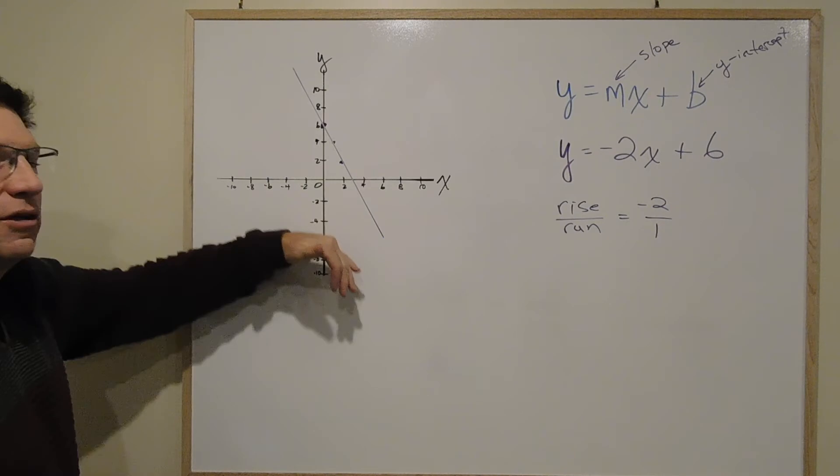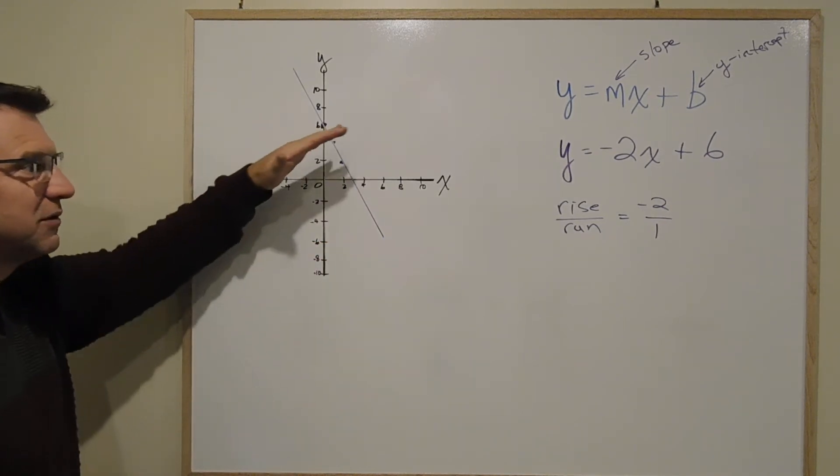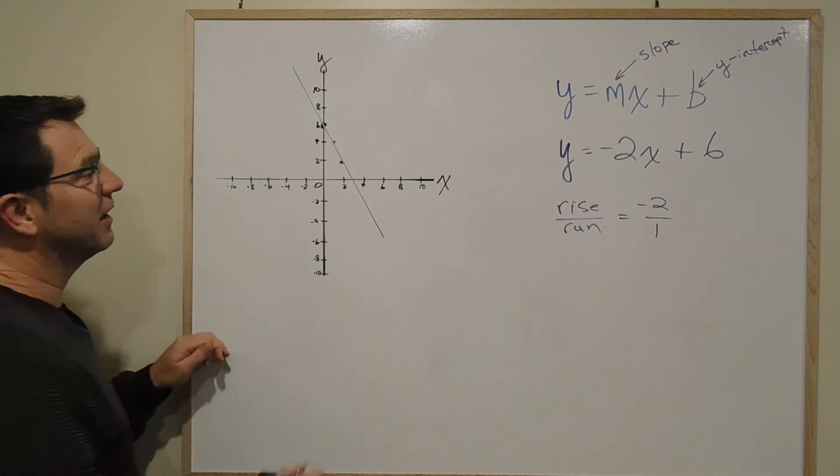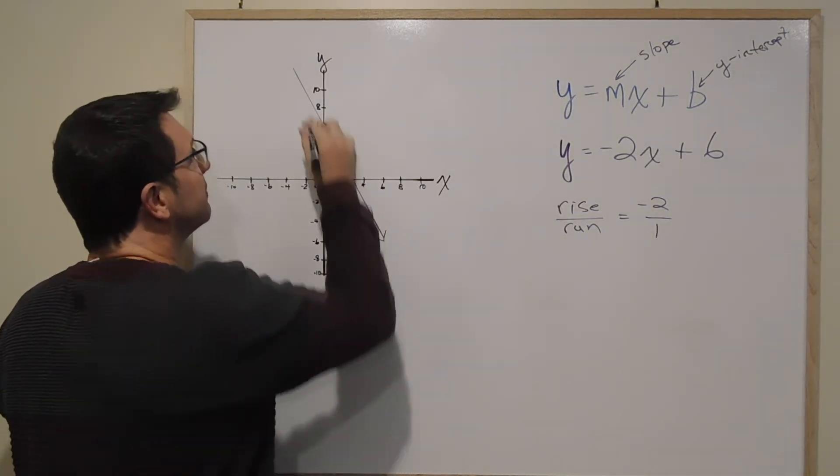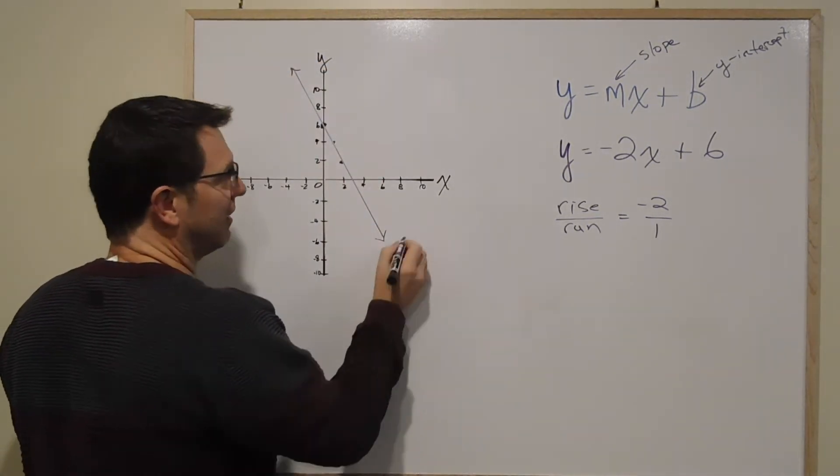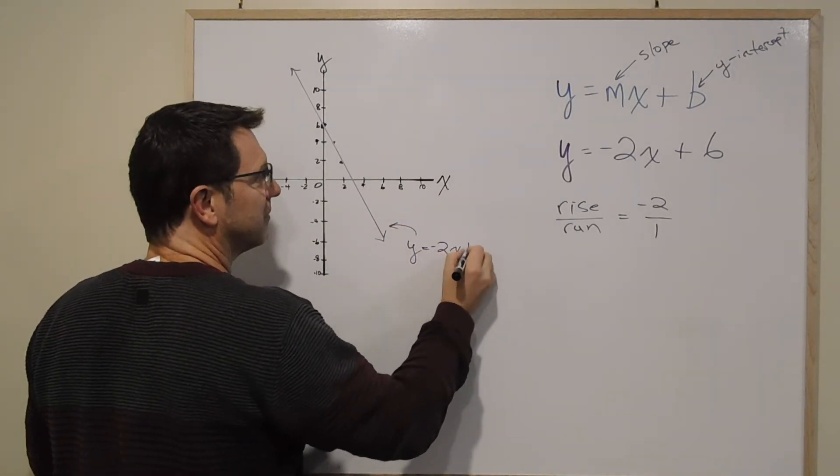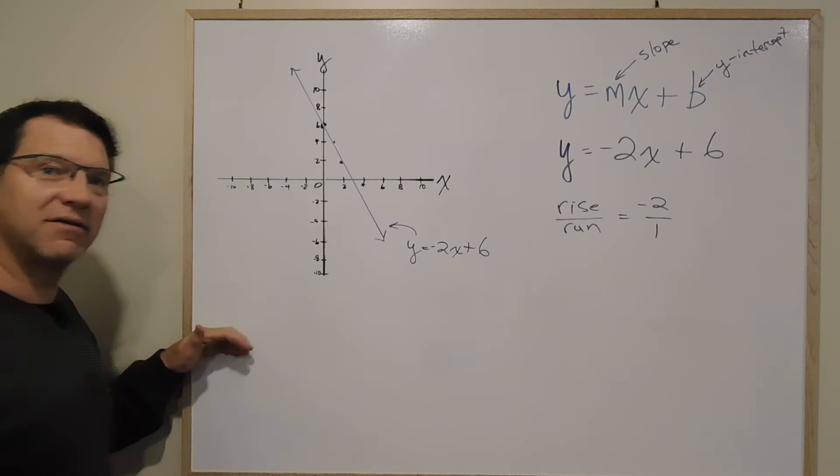So now that line is a lot steeper than the line we did last slide, which rose slowly at 1 5th. And that's a pretty steep line. I would put arrows on it. And I could label it. Y equals negative 2x plus 6. And I've graphed it.